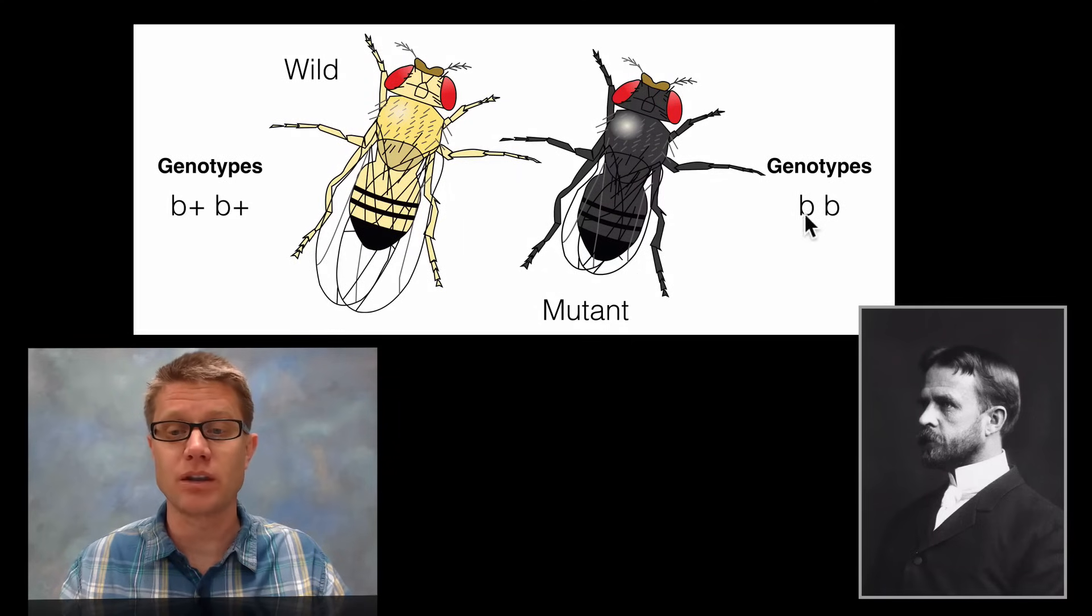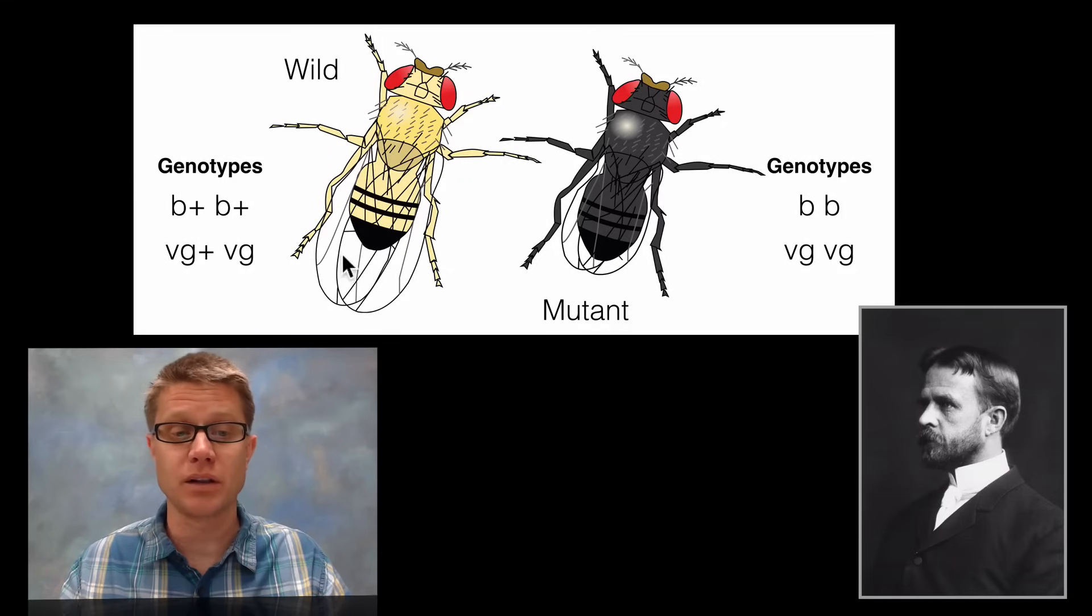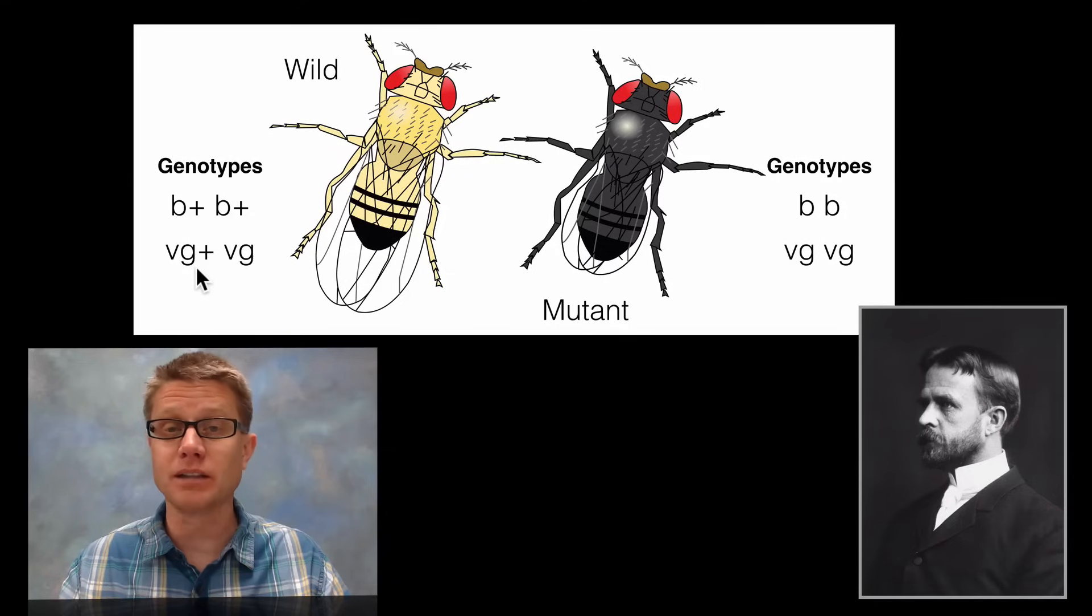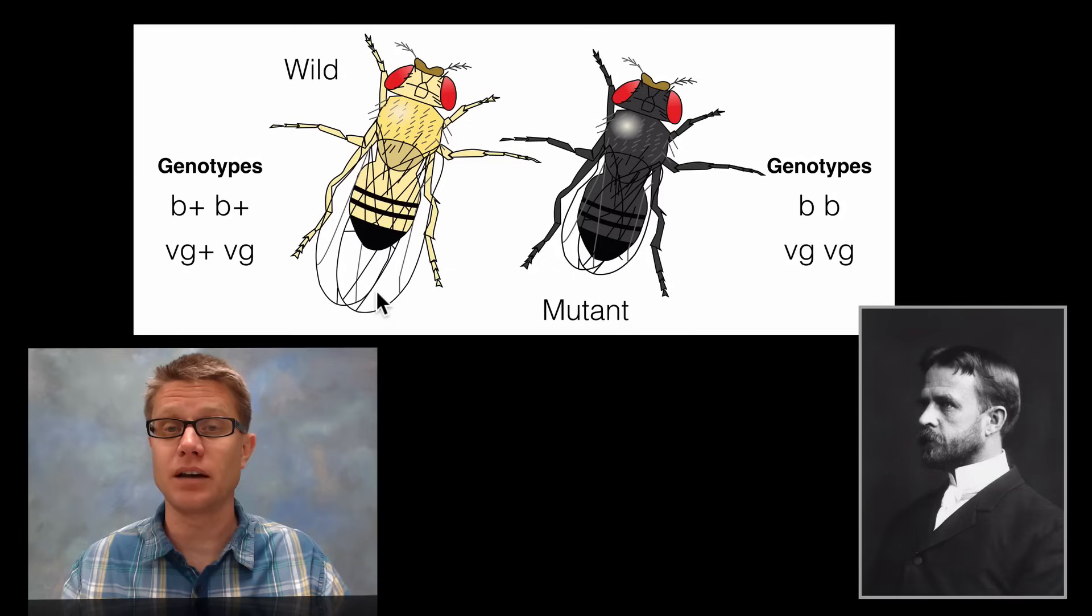If we look at the genotypes, the one on the right is little b, little b, so it has that black coloration. The one on the left we simply add a plus to it, and that implies that it's of the wild type. We could also look at vestigial wings. Maybe the genotype of the one on the left has one of the wild type normal wings but it has one of the vestigial genes. It still has normal wings on the left, and that's because the wild type is going to be dominant in this case.